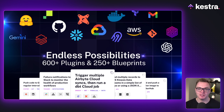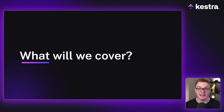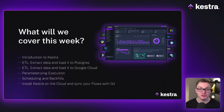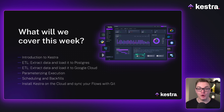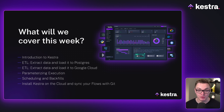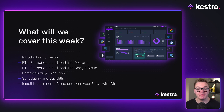That gives you a bit of an overview of Kestra. Let's have a look at what we're going to cover this week to allow you to build these powerful workflows. We're going to start with an introduction to Kestra — a video series to help you understand the fundamentals and concepts. Following that, we're going to build our own ETL pipelines, extracting data on New York taxis and loading that into a Postgres database. Then we're going to put that into Google Cloud, both into Google Cloud Storage and BigQuery, and then make our workflows dynamic by passing in parameters at execution to allow different things to happen without creating different workflows.